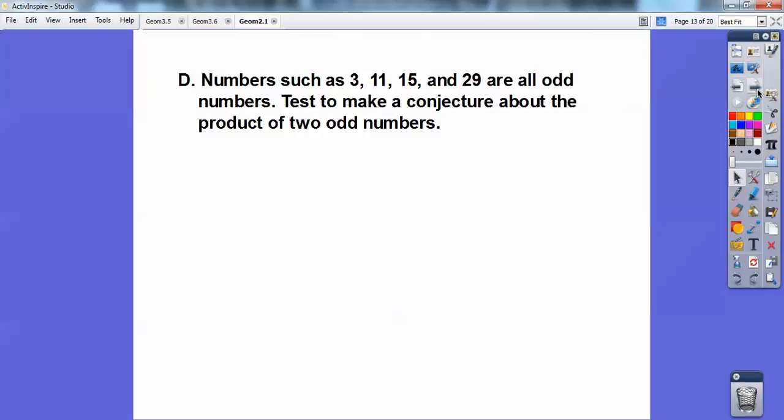So test to make a conjecture about the product of two odd numbers. All right, so what I would do is just multiply any two odd numbers together, you guys, and see what you get. So I did this, and these are just sample answers. There are infinitely many other ways. It says test to make a conjecture. So I'm going to multiply these two odd numbers. I get 15. 7 times 9, I get 63. 11 times 13, I get 143. Can you see that 15 is also odd? So is 63, so is 143.